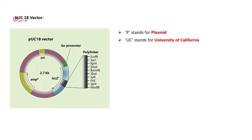Now coming to the size of the PUC18 plasmid vector. The size of this vector is around 2.7 KB, that means around 2700 base pairs.